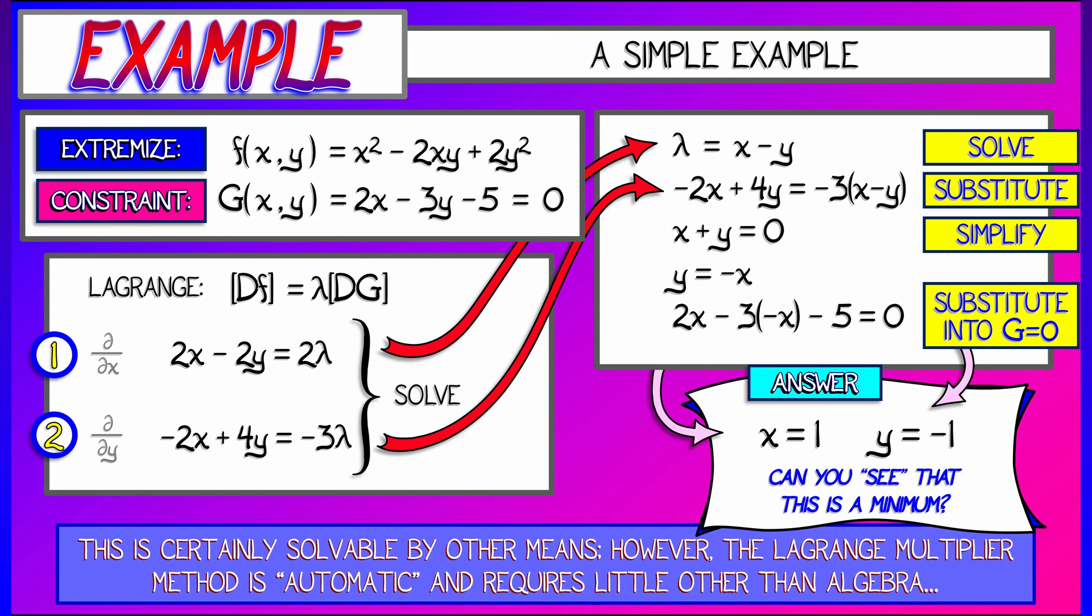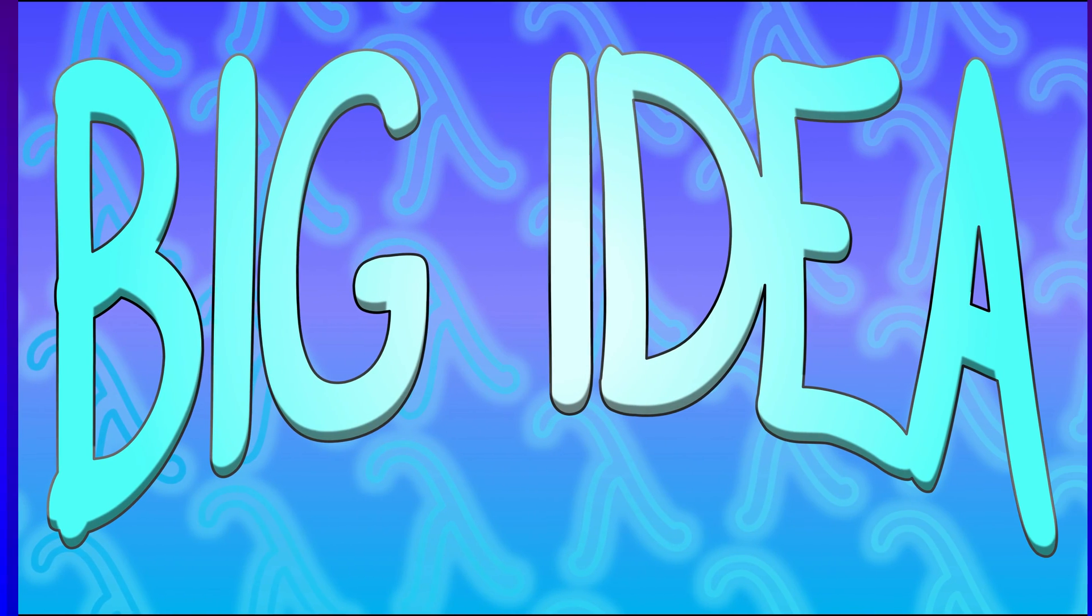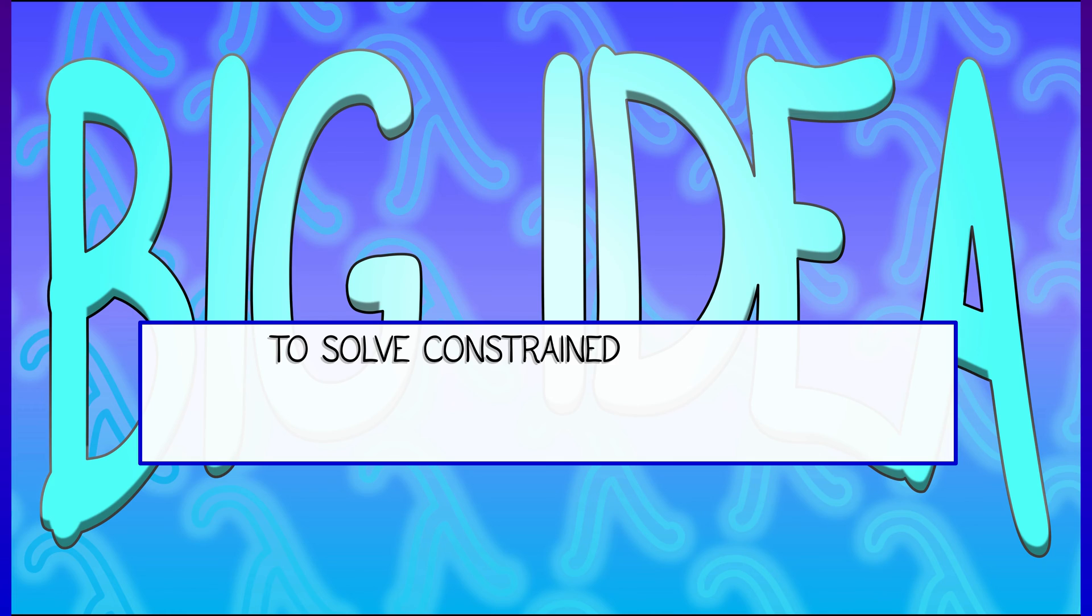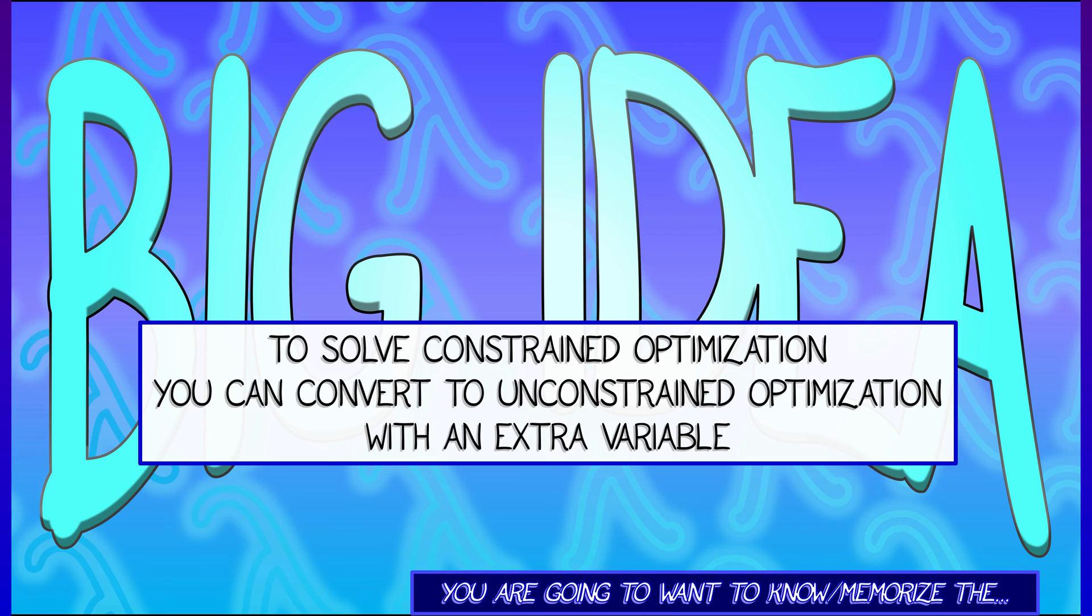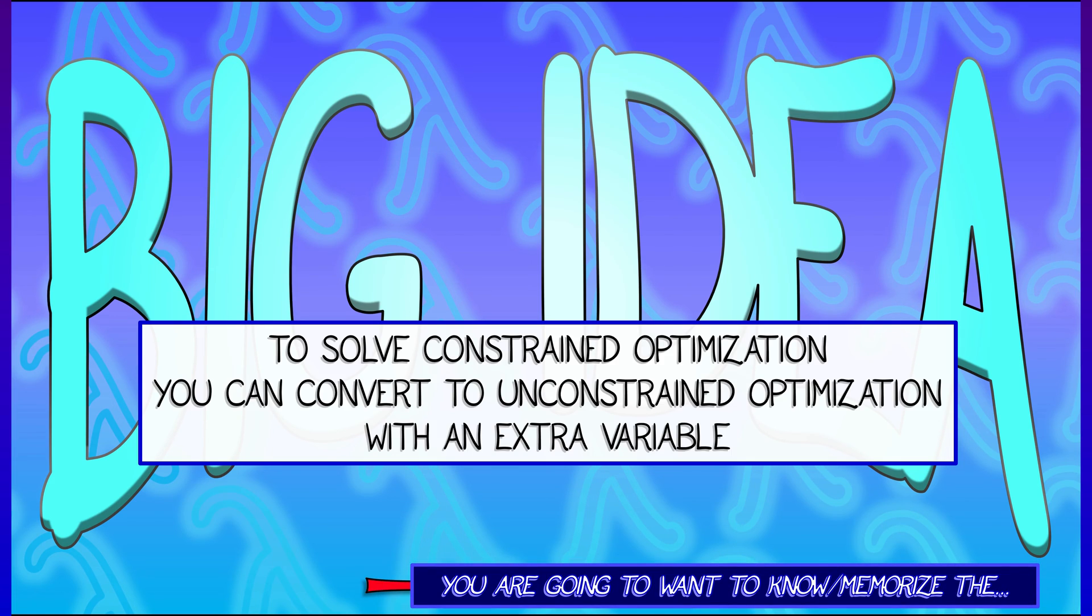You could have solved this by other means. You could have substituted, swapped things in, done some stuff. But what's really nice is that this method is entirely automatic. You just follow the method and do a bunch of algebra. The big idea is that to solve a constrained optimization problem, you can convert it to an unconstrained problem with this extra variable, this variable lambda.